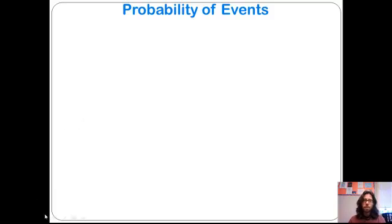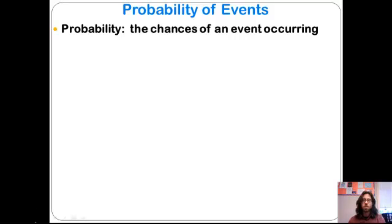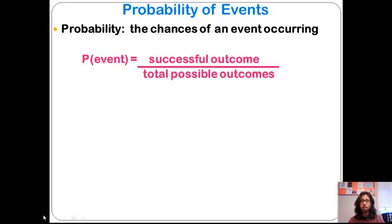Probability of events basically boils down to the chances that we might win, which is important to know whether you are playing the lotto or looking at buying insurance — you want to know what the probability is that you'll need it and whether it's worth the money. The probability of an event is equal to the number of successful outcomes over the total possible number of outcomes.